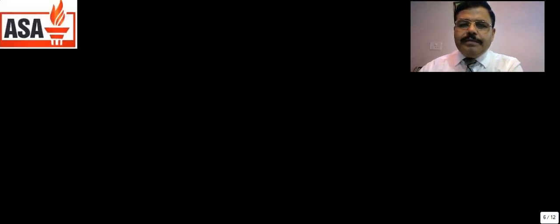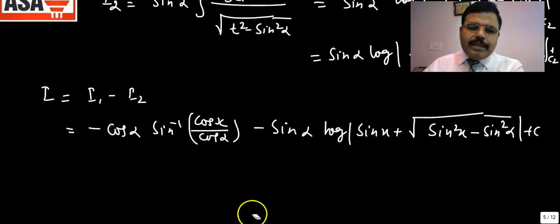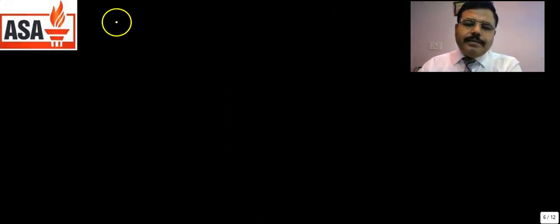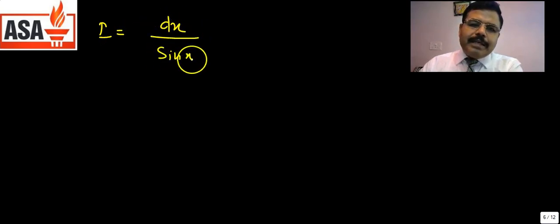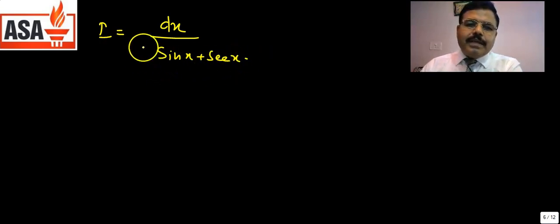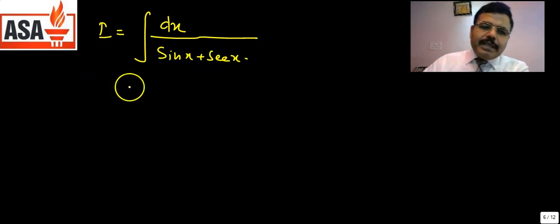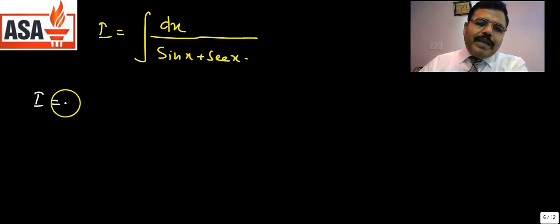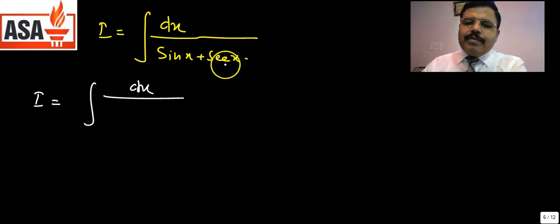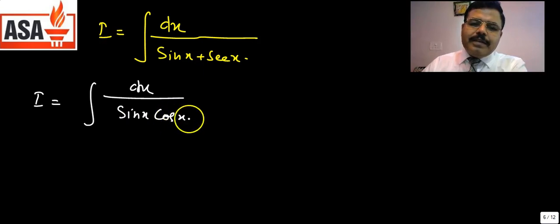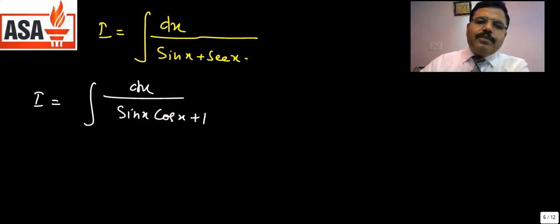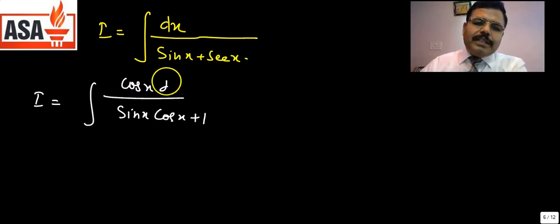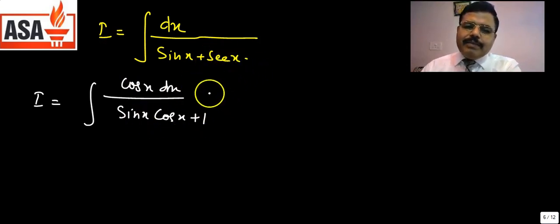Now the next question: I = ∫dx / (sin x + sec x). This question is very important and students are usually not able to do it. Let us write sec x = 1/cos x, so taking LCM the denominator becomes (sin x cos x + 1) / cos x. Bringing cos x to the numerator, we get ∫cos x dx / (sin x cos x + 1).